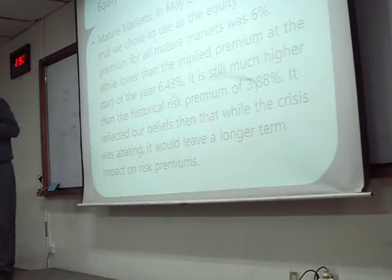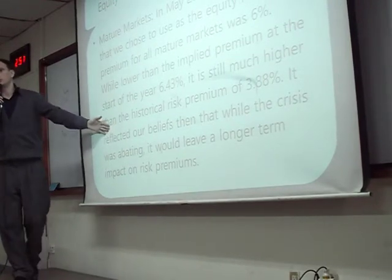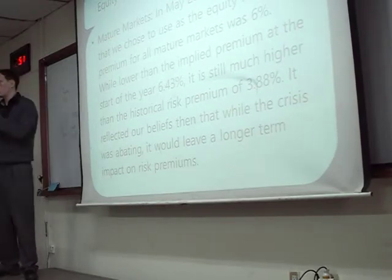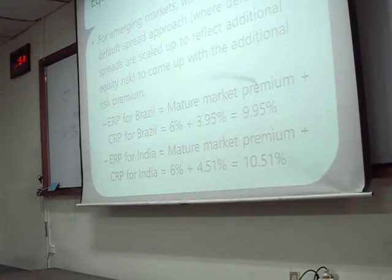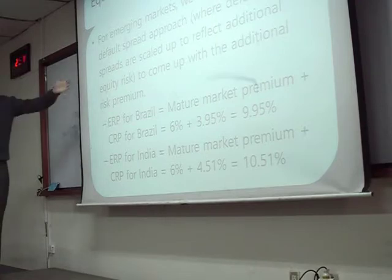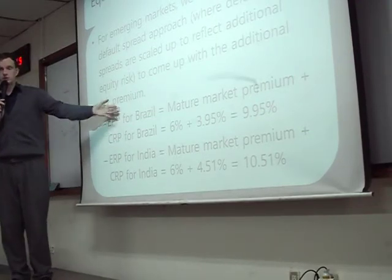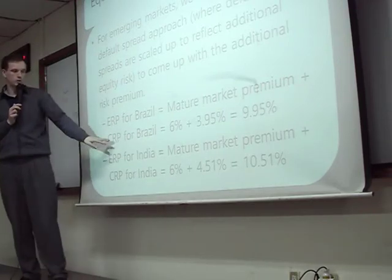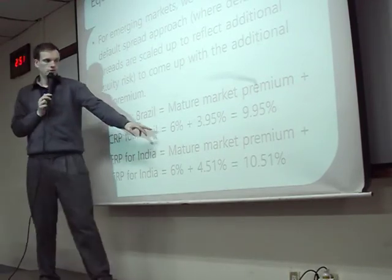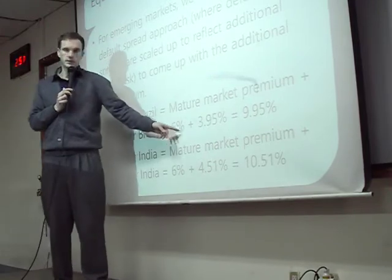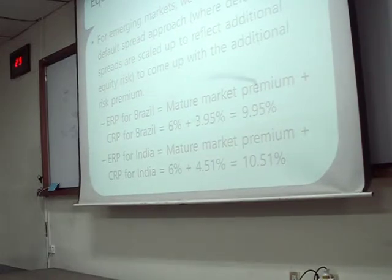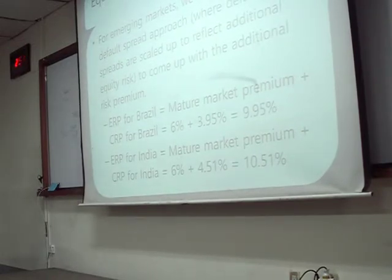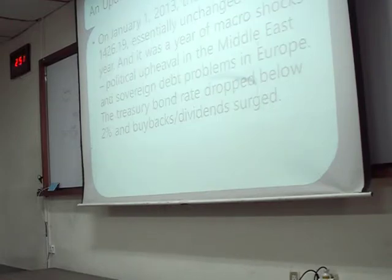So we have to decide which one is more accurate — are we going to use the implied premium or the historical premium? For emerging markets, we do the same thing as with the historical premium. We already calculated the country risk premium for Brazil: 3.95%. Add this to 6%, giving 9.95%. So just as with the historical premium, for emerging markets we add on what we call the country risk premium.